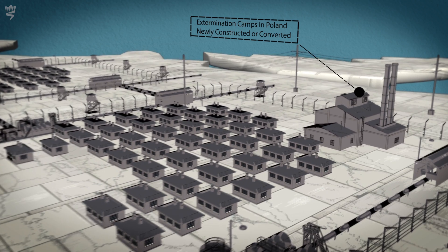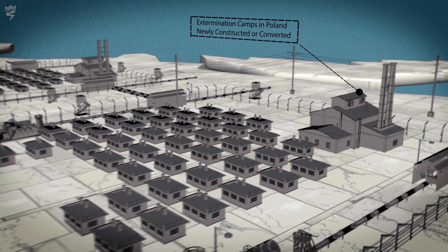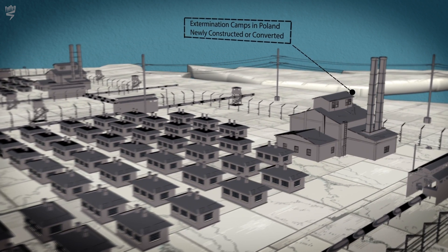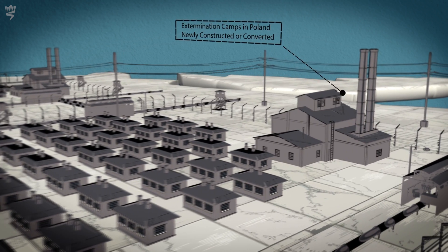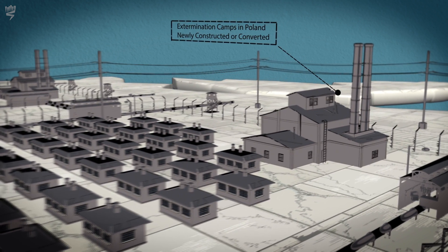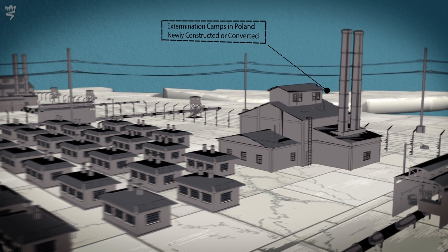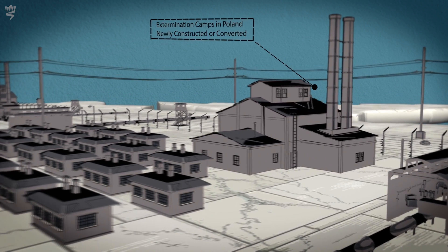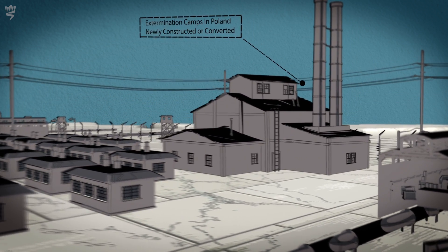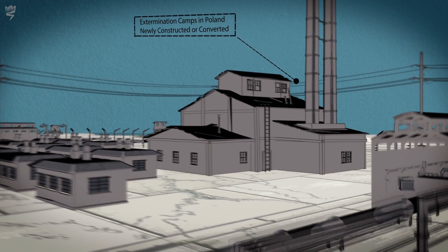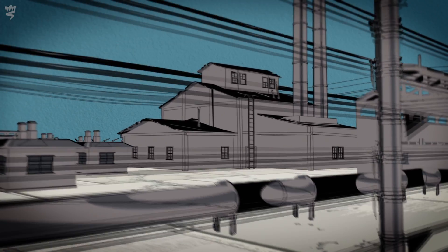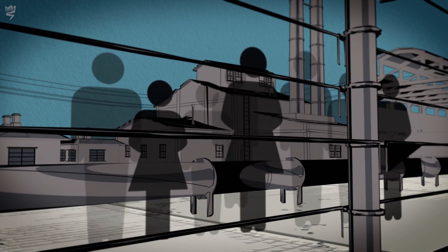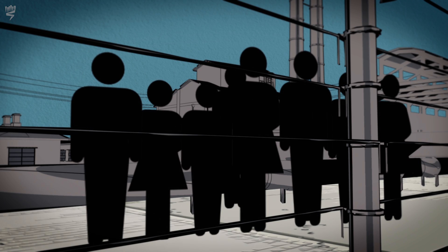For this purpose, six extermination camps were constructed and converted from existing camps. Some of them were concentration and extermination camps, such as Auschwitz-Birkenau and Majdanek, and some were exclusively extermination camps, such as Chelmno and Treblinka. In total, tens of thousands of different kinds of camps were constructed, in which millions of people were murdered or died.